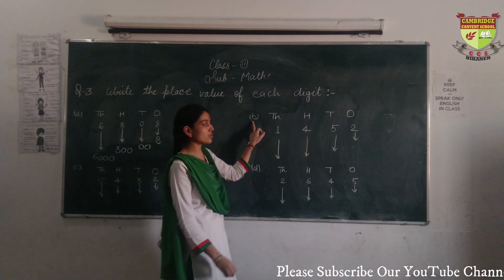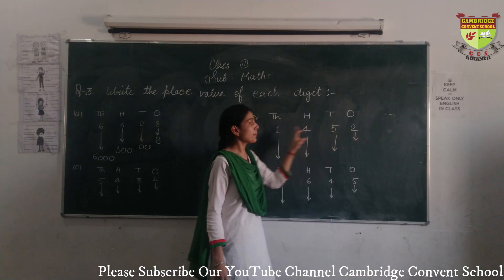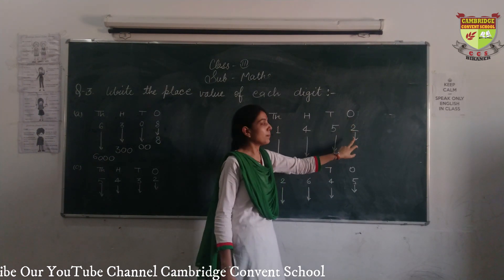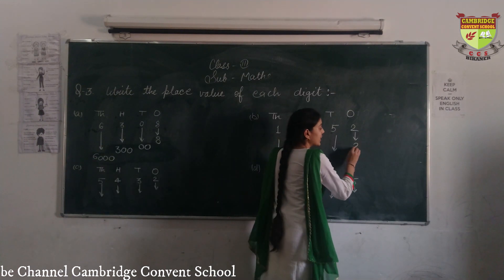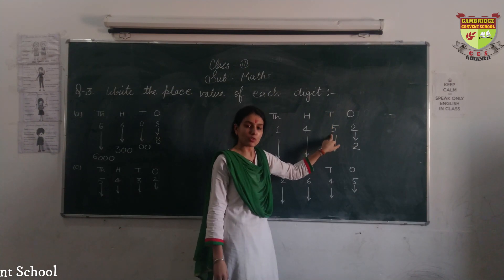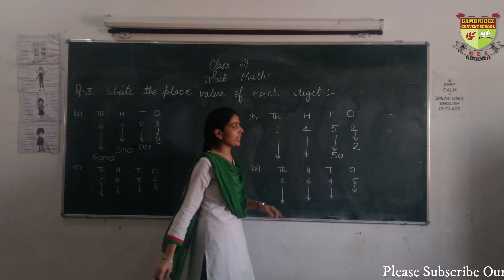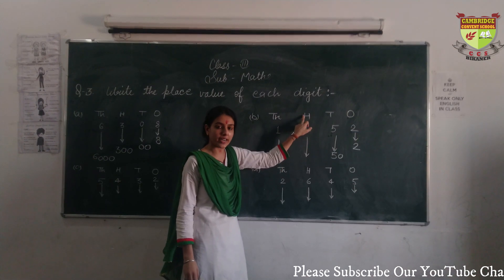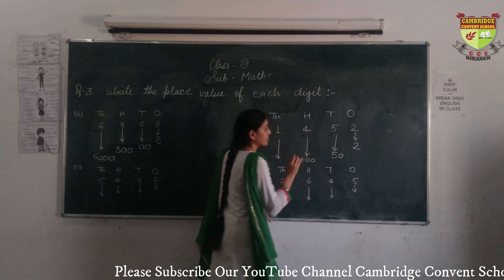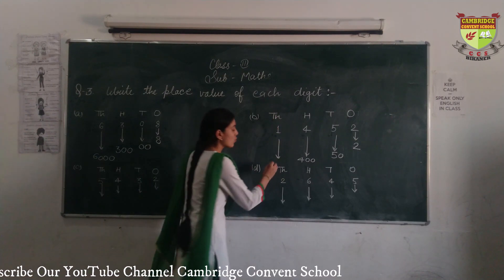Next number D: 1,450. Starting from the extreme right: 0 is in 1's — place value is 0. Wait, the number is 1,450, so 0 is in 1's — place value of 0 is 0. 5 is in 10's — place value of 5 is 50. 4 is in 100's — place value of 4 is 400. 1 is in 1000's — place value of 1 is 1,000.